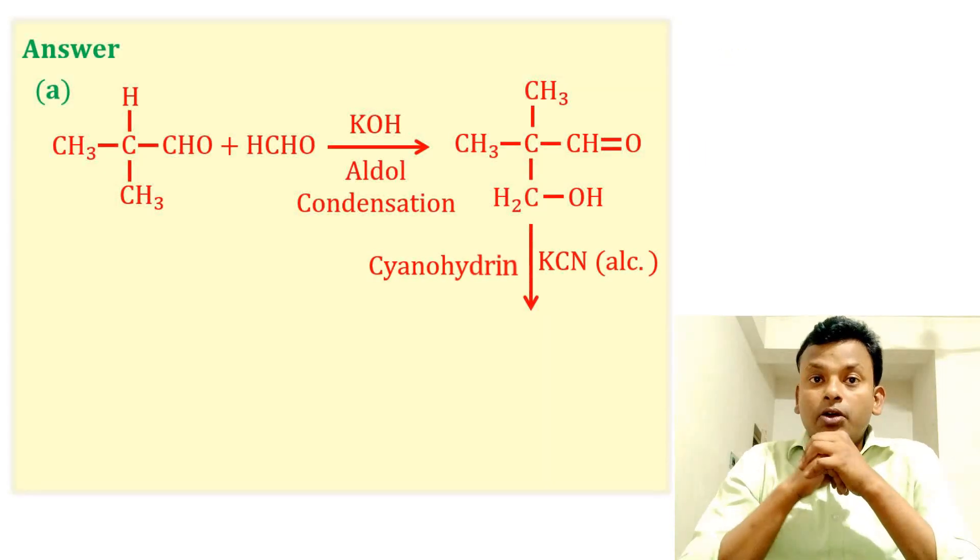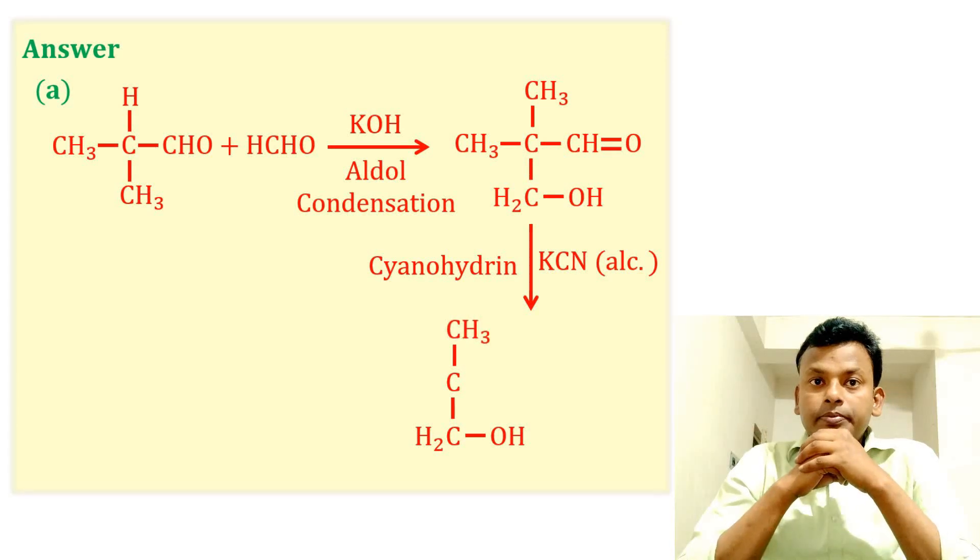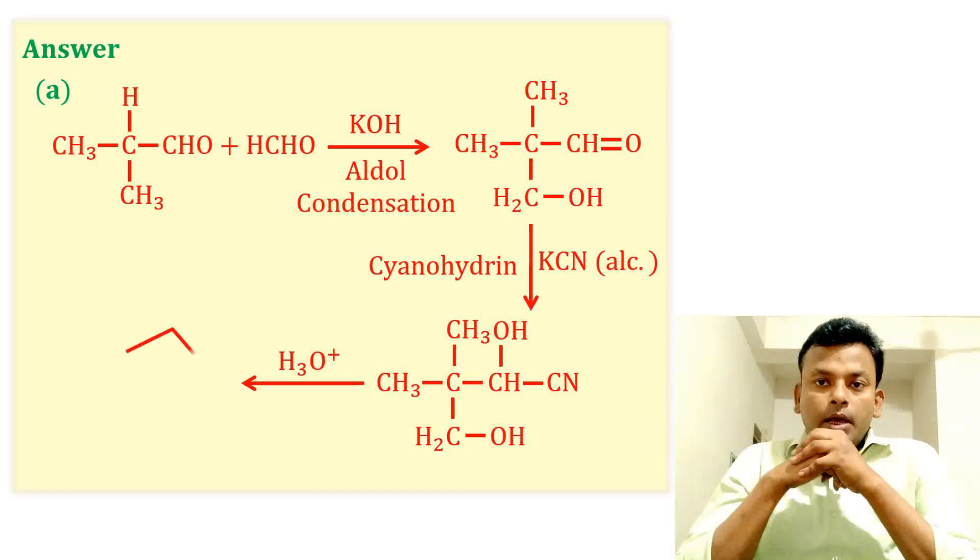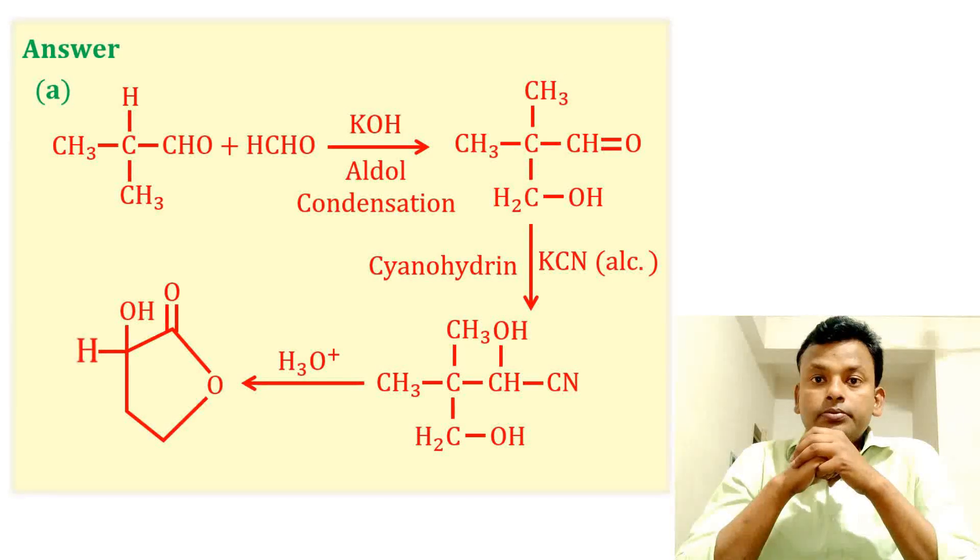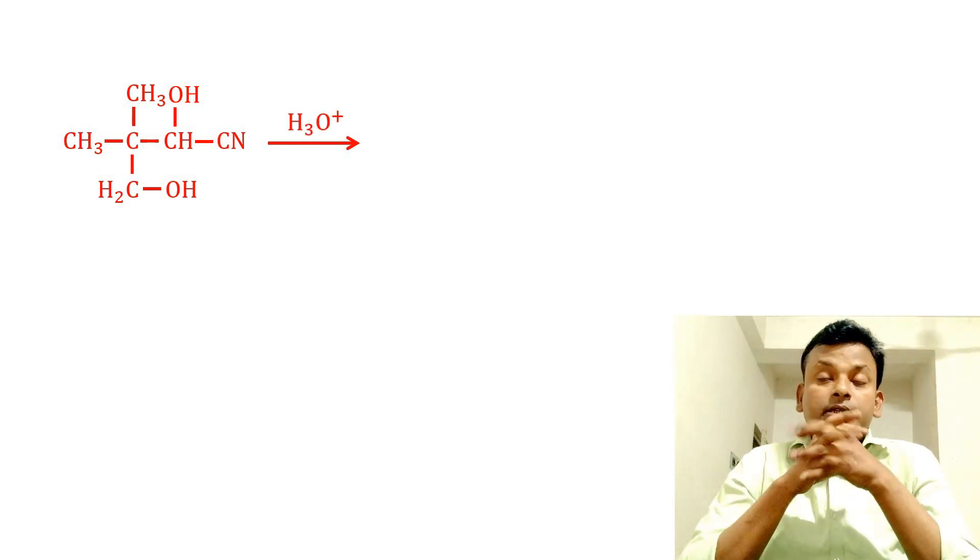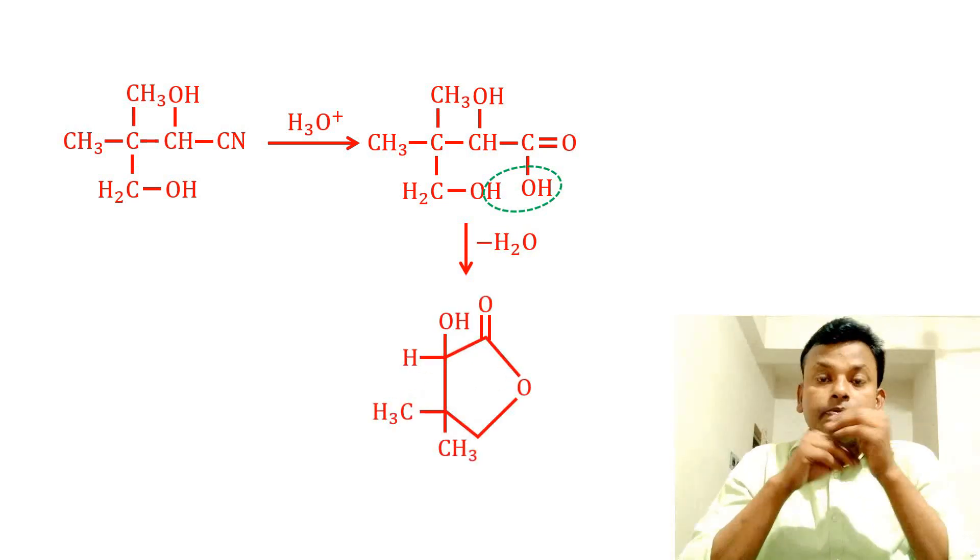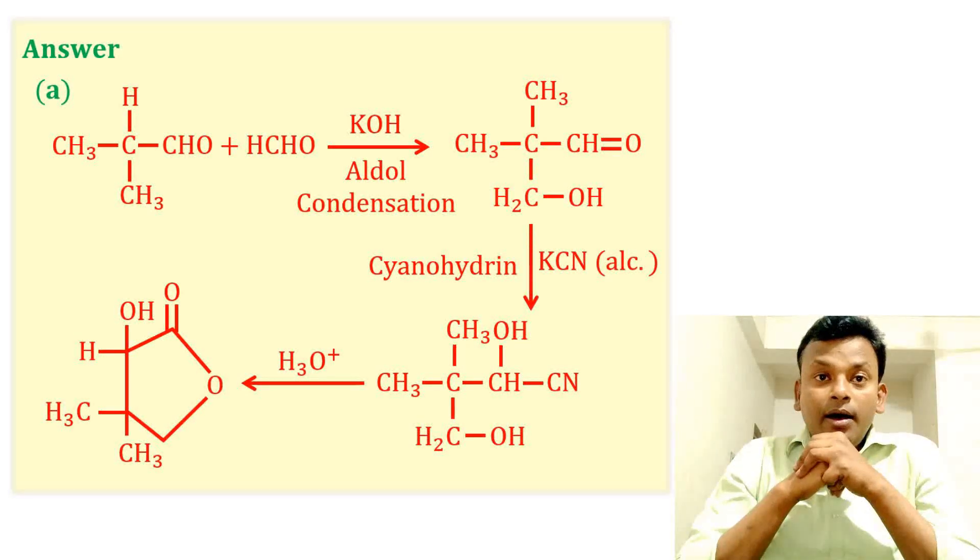Again, this reacts with alcoholic KCN, that is cyanohydrin formation. From cyanohydrin, this cyanohydrin undergoes hydrolysis to give electron. And this cyanohydrin first hydrolyzes to carboxylic acid, then removal of water gives a cyclic compound, that is lactone. So option A is the correct answer, that is two methyl propanal is the compound X.